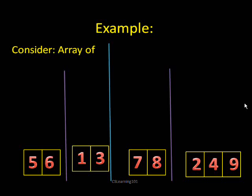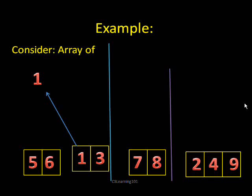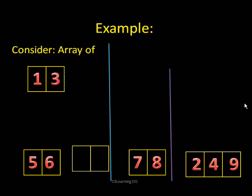Now we have four lists; we compare the first two lists together and then the next two lists together. Comparing one and five — one is less than five, so one goes first into a new list. Then three becomes the first element, and three is less than five, so three goes next. Now one list is completely empty, so you just add the remaining elements: five, then six.